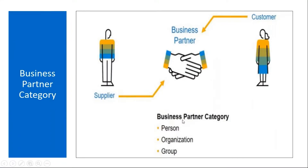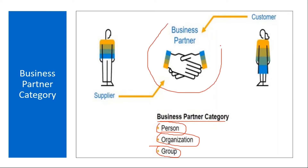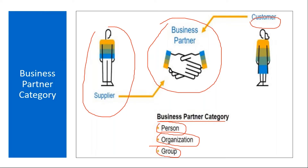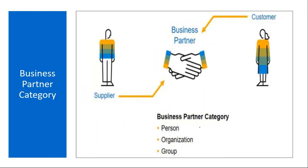To create a business partner, the first thing you need is the category — the Business Partner category. When you go to the transaction, you will see three options: Person, Organization, or Group. A business partner can be a supplier or a customer.